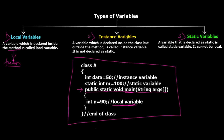A variable declared inside the class but outside any method, and not declared as static, is called an instance variable. In the example, inside class A at the start we have 'int data = 50' — this is an instance variable because it's inside a class but not inside any function. Lastly, a variable explicitly declared as static is called a static variable. In the example, 'static int m' — because we've explicitly stated static, it becomes a static variable.